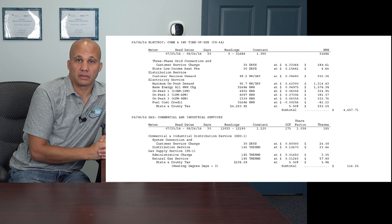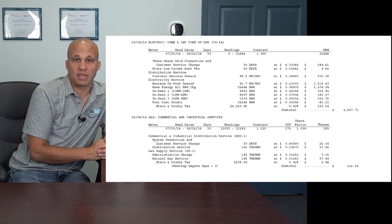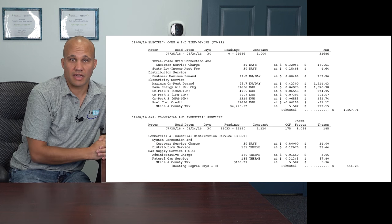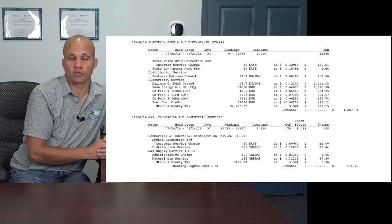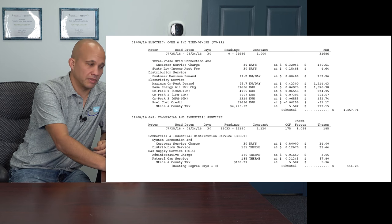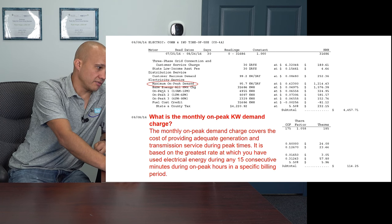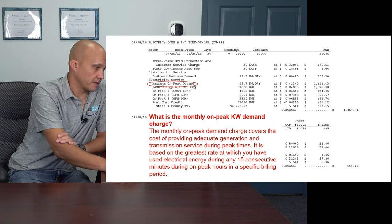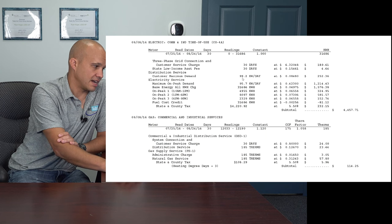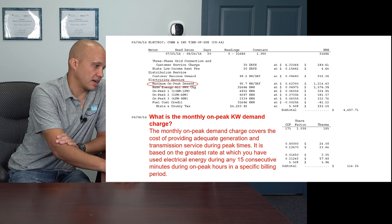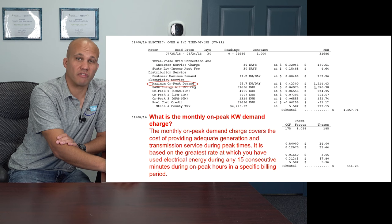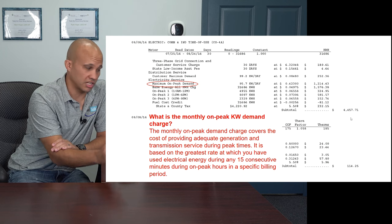They want you to keep KW demand low, because if you're a big user and always spiking, you force them to make infrastructure upgrades to the physical wiring of the community, which is expensive. Looking at this bill: the distribution demand charge is 99.2 KW at 8.4 cents — that's $252 that month. And then the electricity demand charge is 95.7 KW — another $1,200. So on this person's $4,500 bill, about $1,500 of it is going towards demand charges and the rest towards actual energy usage.